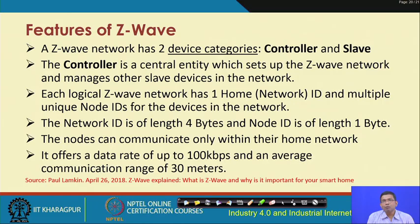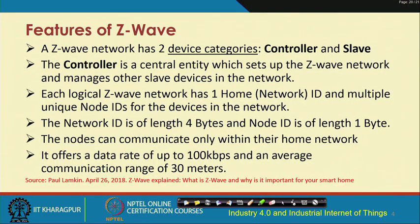Each logical Z-Wave network has one home ID — the network ID — and multiple unique node IDs corresponding to the slave devices. The network ID is 4 bytes in length and each node ID is 1 byte. Nodes can communicate only within their home network. The data rate supported is up to about 100 kbps over a range of up to 30 meters, which is good enough for home automation and small industrial applications. Z-Wave is a low cost, simpler technology compared to ZigBee.